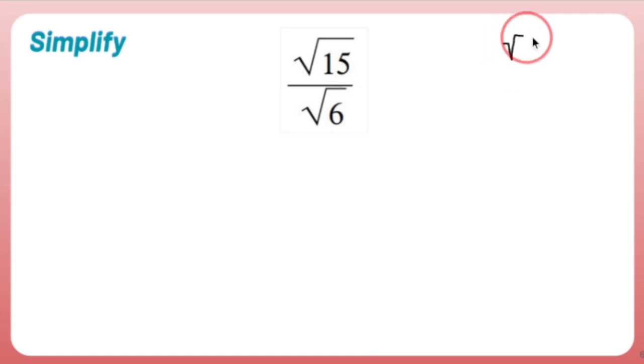Thing number one is if I give you something like the square root of a over the square root of b, I'm allowed to write that as the square root, one big square root of a over b. I'm allowed to do that.